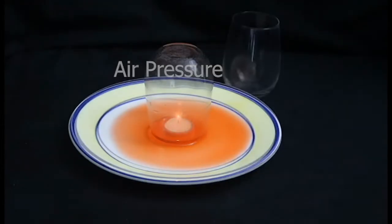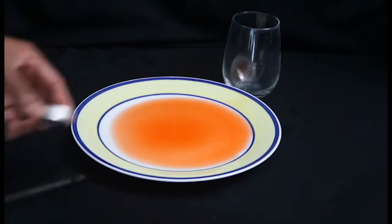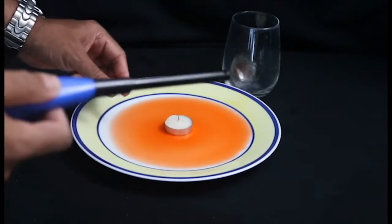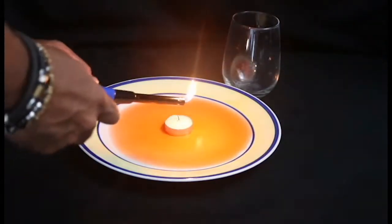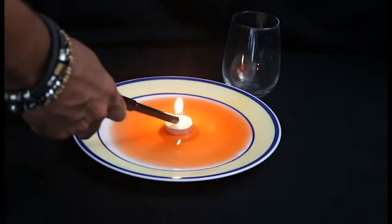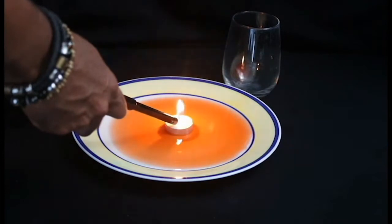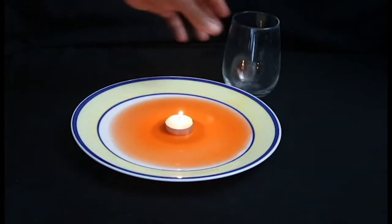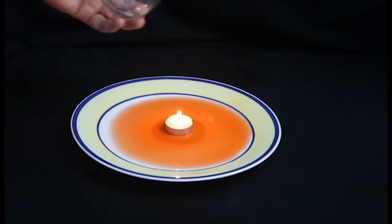In this activity, we're going to figure out how heat affects air pressure. To do this, we're going to light a tea candle and place it in our actual dish that has food coloring and water mixture. After that, we're going to place a drinking glass on top of our tea candle and observe what happens.